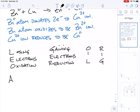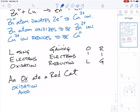Some other mnemonic devices to help us remember: we can say an ox ate a red cat. What that helps us remember is what's happening in oxidation and where in the cell this would take place. We say that oxidation happens at the anode.